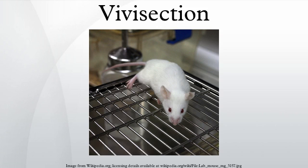In Australia, the Code of Practice requires that all experiments must be approved by an Animal Experimentation Ethics Committee that includes a person with an interest in animal welfare who is not employed by the institution conducting the experiment, and an additional independent person not involved in animal experimentation.